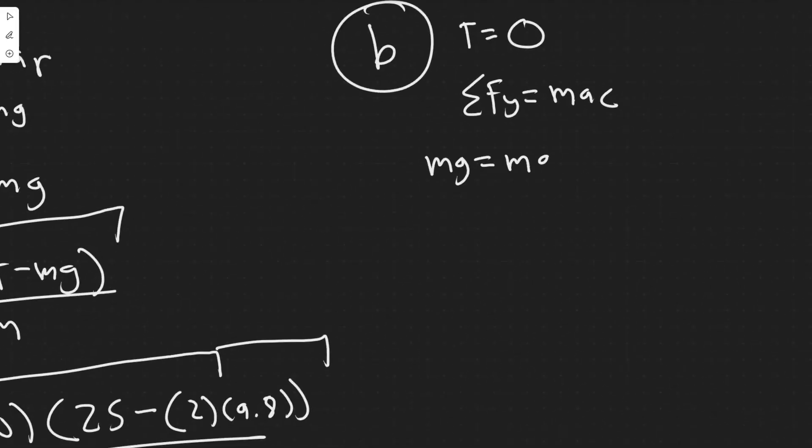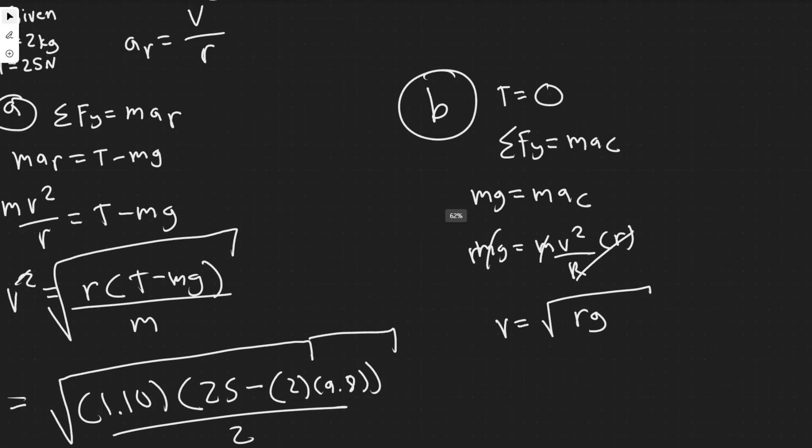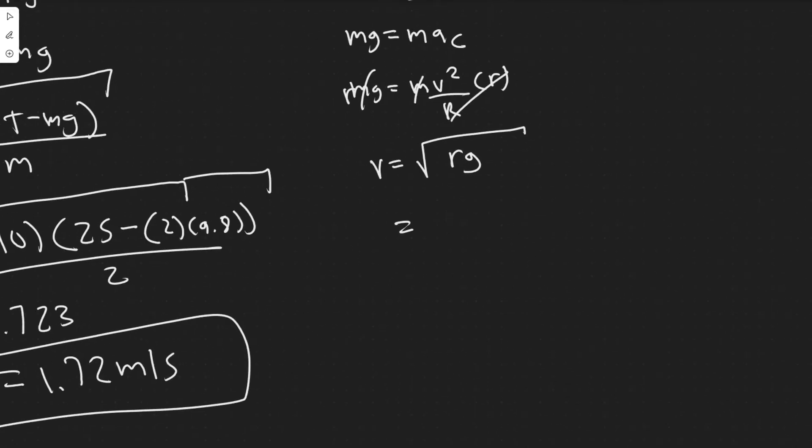So mg equals m*a_c. Keep in mind, a_c is v squared over r. The m will cancel from both sides, multiply both sides by r, and if you square root, you'll get v equals the square root of rg. So you're just going to do the square root of r, which is 1.1 times g, which is 9.8.